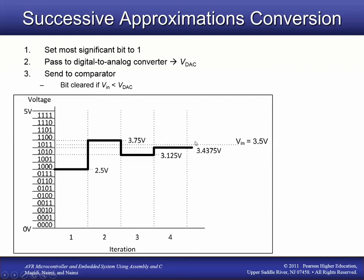The idea is to arrive at an approximation by first setting the most significant bit to 1. Here's an example where VREF is 5 volts and we have a 4-bit ADC. VN is 3.5 volts — this is the voltage we want to convert to a number. The first step is to set the most significant bit to 1. In the first iteration, we start with bit 3, so our first guess for the digital value is 1000.